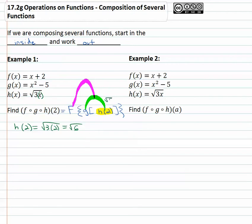So h of 2 was the square root of 6, and we're going to plug that solution into g. Now we're going to find g of the square root of 6.